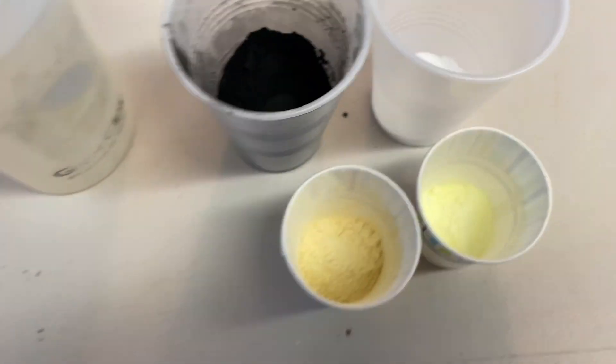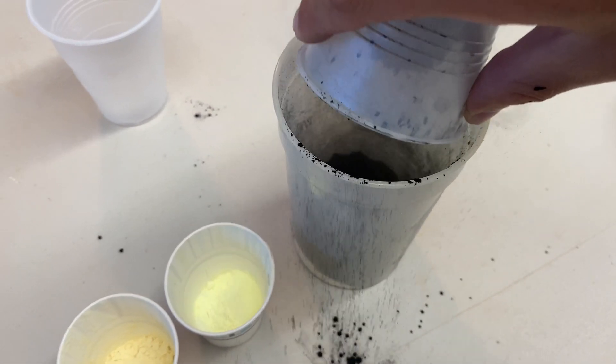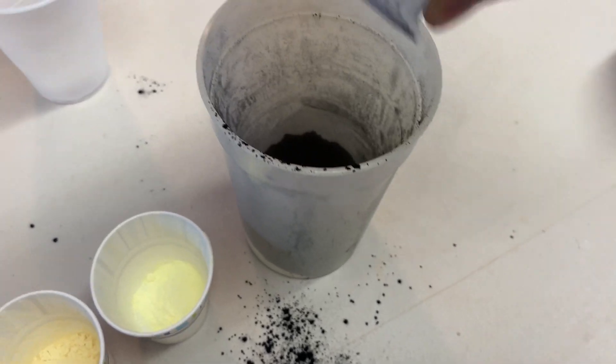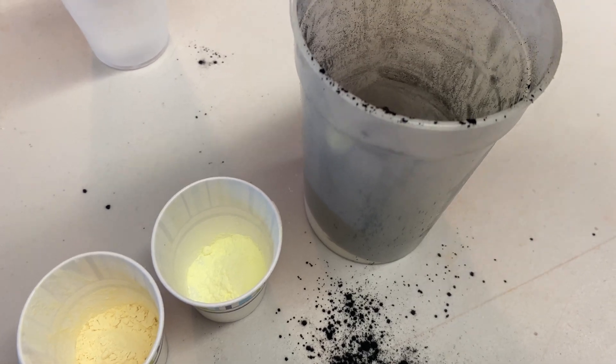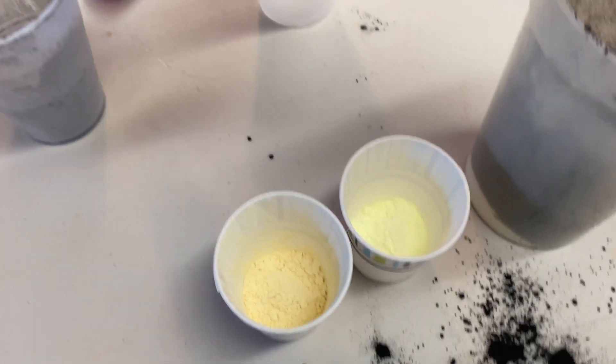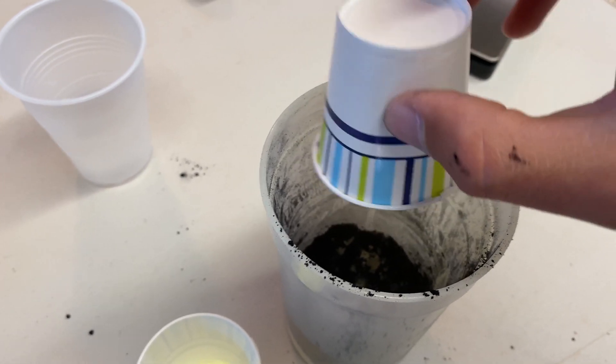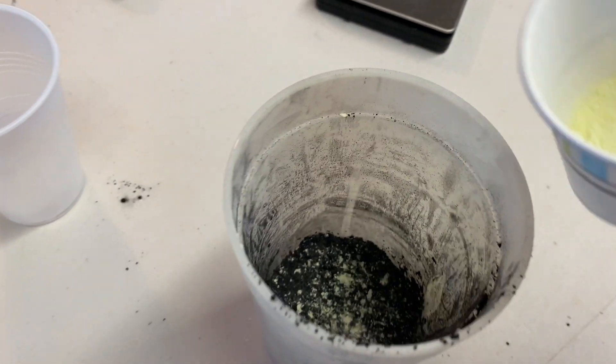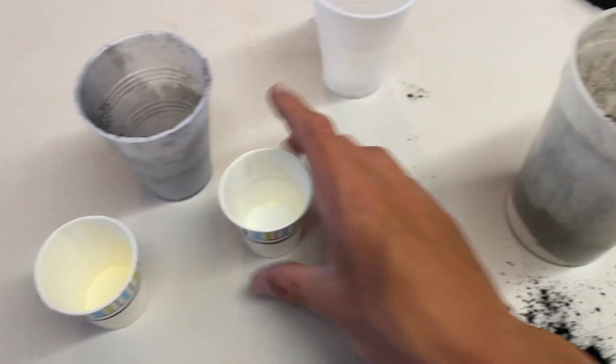So now that you have everything measured out, the next thing you're going to do is add everything to a large container so that you can mix it. And be very careful when you do this, because as you can see, I just spilled the charcoal powder. This is because it's super fine. So if you try to pour it, it will possibly fly out. Try to get it as close as you can to the container to minimize any spilling. And mix this for 1 to 2 minutes.